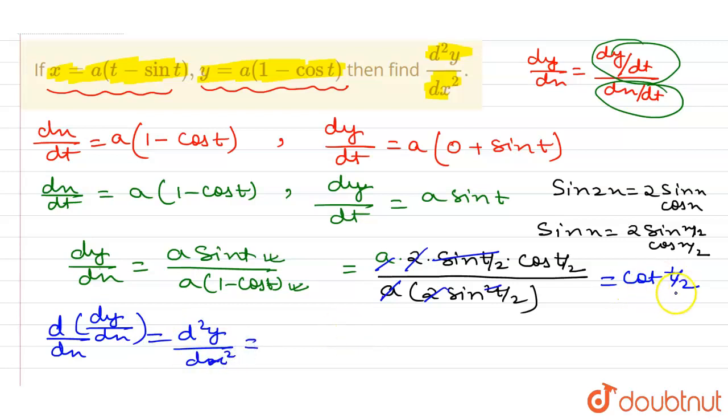And this is cot(t/2). So the differentiation of cot x is minus csc² x, so I write here minus csc²(t/2), and the differentiation of t/2 is 1/2.